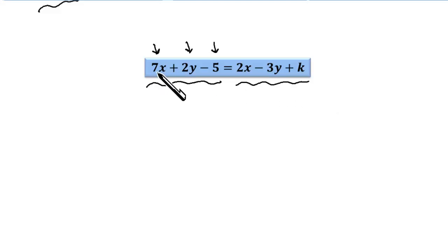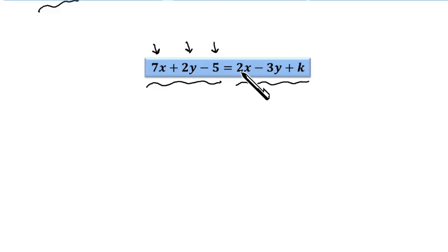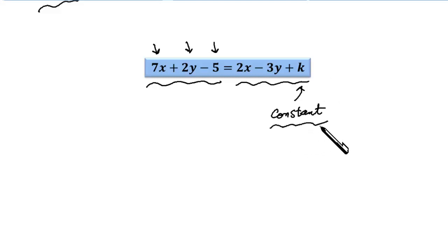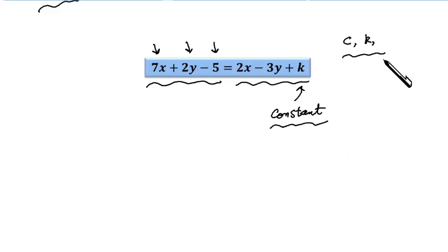The coefficient of 7x is 7. The coefficient of 2y is 2 and 5 is a constant number. The coefficient of 2x is 2. The coefficient of 3y is actually negative 3. And k over here — remember, in this case k is a constant number. Though it looks like a letter, it represents a constant number. Certain letters like c or k represent constant numbers and they are not variables.